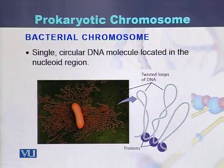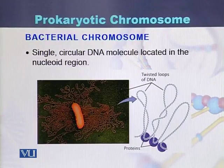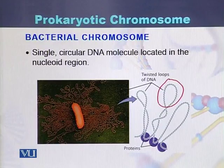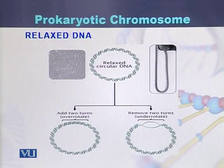Here is the diagram of the bacterial chromosome. The bacterial chromosome is single, circular in shape, and it is located in the nucleoid region. We can see the coiled and twisted structure of the DNA of the prokaryotic cells. The DNA of the prokaryotic chromosome can be relaxed or it can be in the form of coiling.